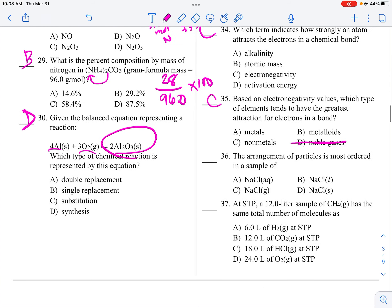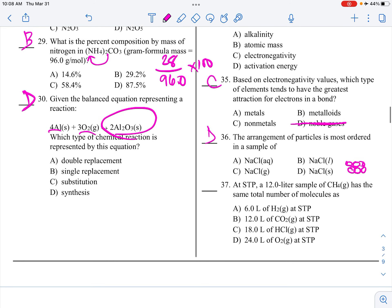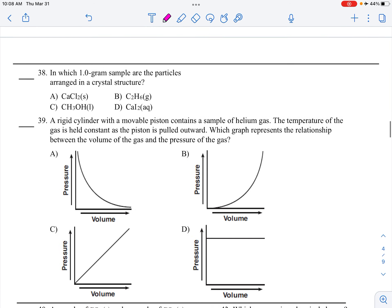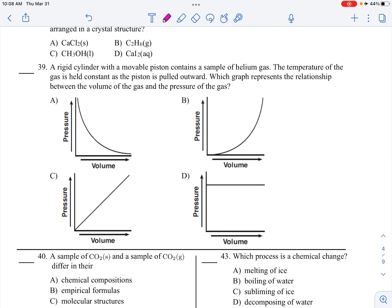The arrangement of particles is most ordered in what? So, ordered means low entropy. It would be the solid, because they're all packed together like this. This is Avogadro's hypothesis again. You've got 12 liters, so we want 12 liters. Yes, I know that they're different substances, different masses, but the volumes are good. Another crystalline structure, that would have to be a solid.